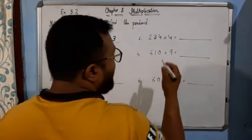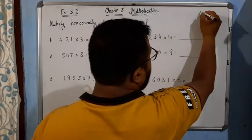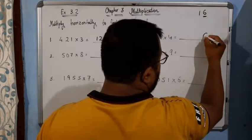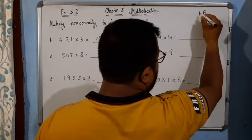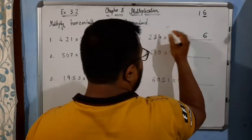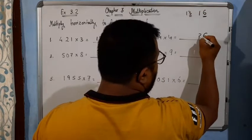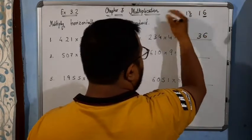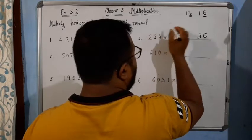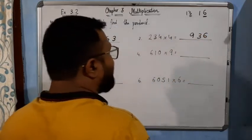Now come to the next one. 4 times 4 is 16. 6 we will write here, 1 will be carried over. So 4 times 3 is 12, plus 1 is 13. So 3 we will write, again 1 will be carried over. So 4 times 2 is 8, then 9. So it will be 936. Very simple.